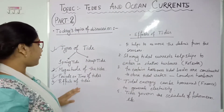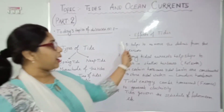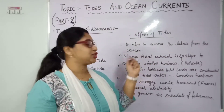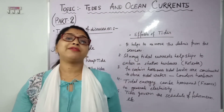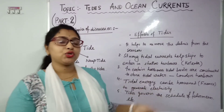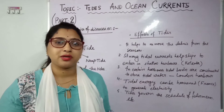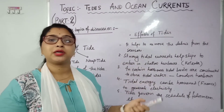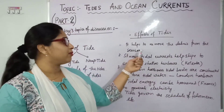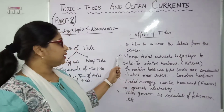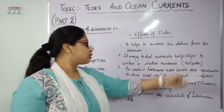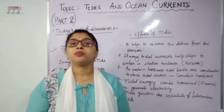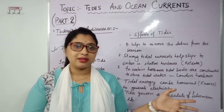Now we have reached the last point: effects of tides. First, tides help to remove debris from the seashore. Due to human activity, beaches and sea shores become dirty. When the tidal water reaches the coastal area, it removes that debris. Second, strong tidal currents help ships enter shallow harbors. Due to deposition of sediment and clay on the sea bed, the depth reduces and ships can strike the bottom and face accidents.